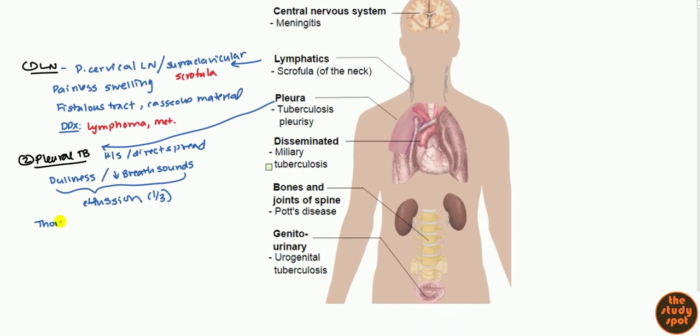You're going to remove the fluid and do some analysis. Initially, it's going to look like straw-colored fluid, very high in protein, low in glucose. Not completely gone, but just low glucose. You'll also get acidity, so low pH. More specifically, ADA and lysozyme will be positive. That's unique to TB. And finally, your WBC would be high.